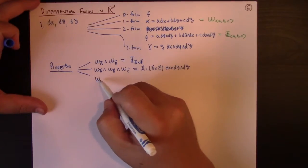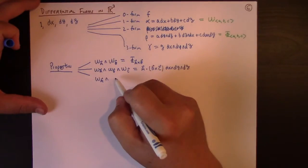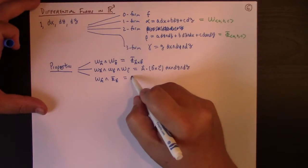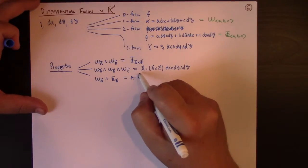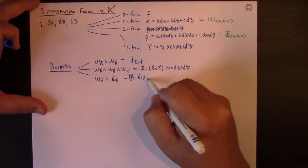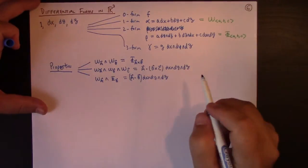So there's a triple product that's naturally encoded by these wedge products. And another thing, the dot product, you can get like this. If I take omega A and I wedge it with the flux form of B, that gives me A dot B dx wedge dy wedge dz.